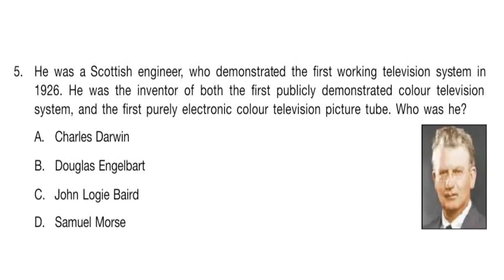Question 5. He was a Scottish engineer who demonstrated the first working television system in 1926. He was the inventor of both the first publicly demonstrated colour television system and the first purely electronic colour television picture tube. Who was he? The answer is option C: John Logie Baird.